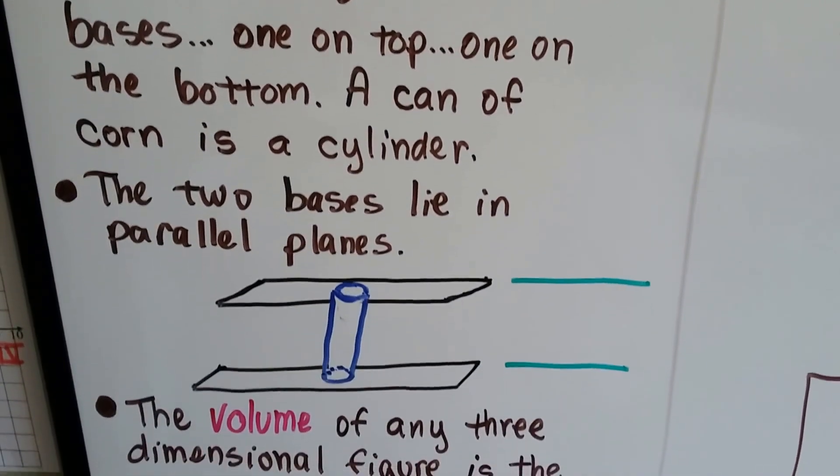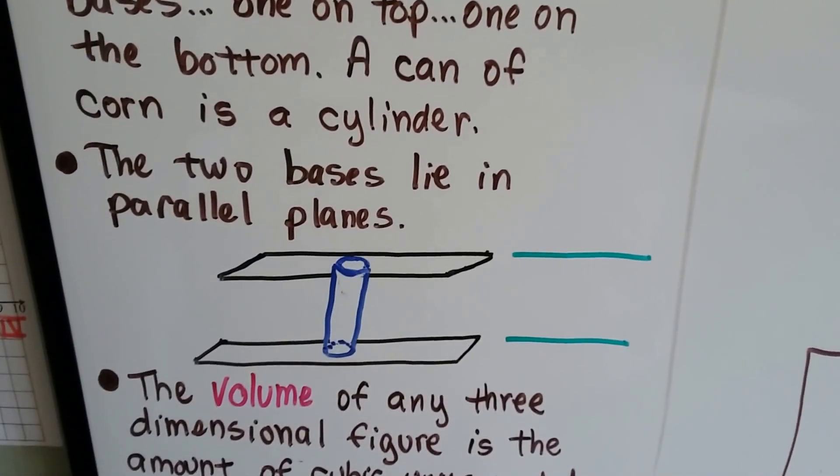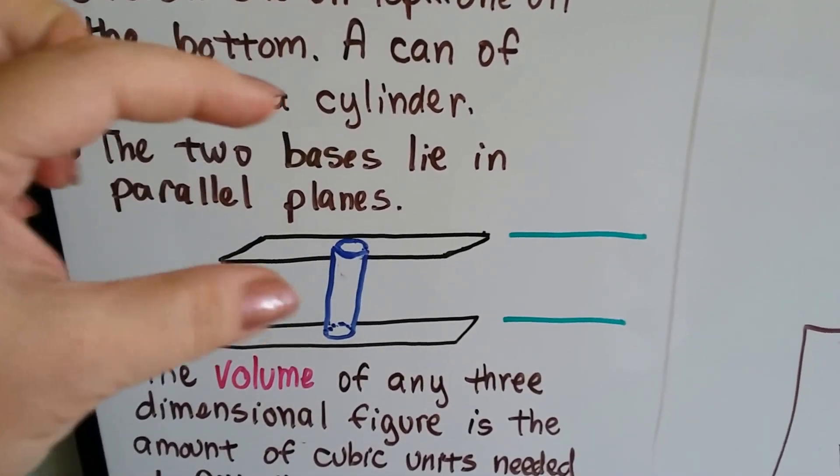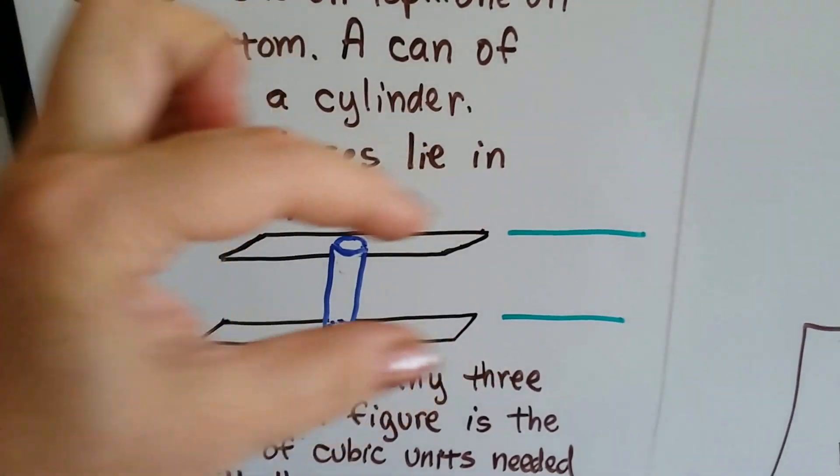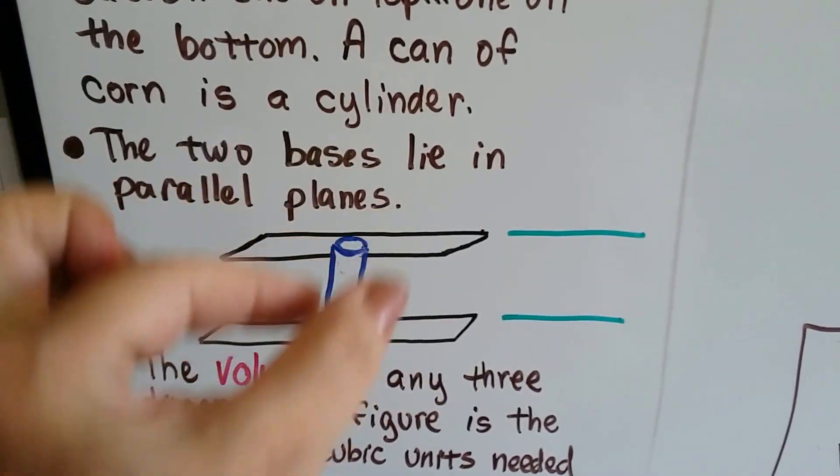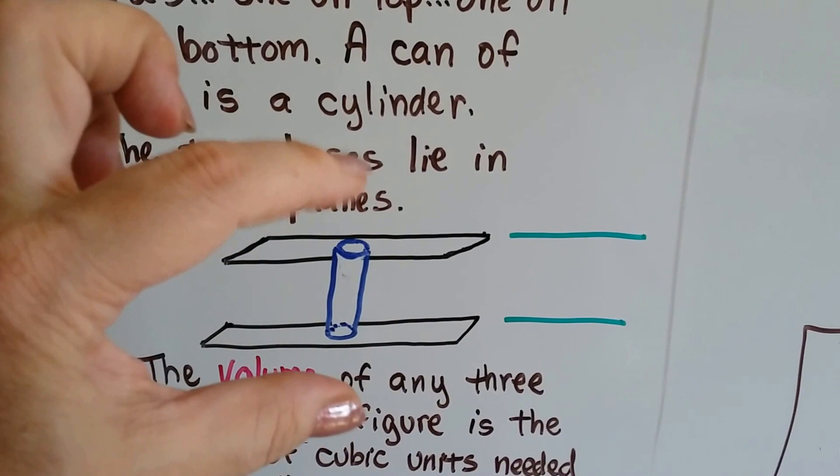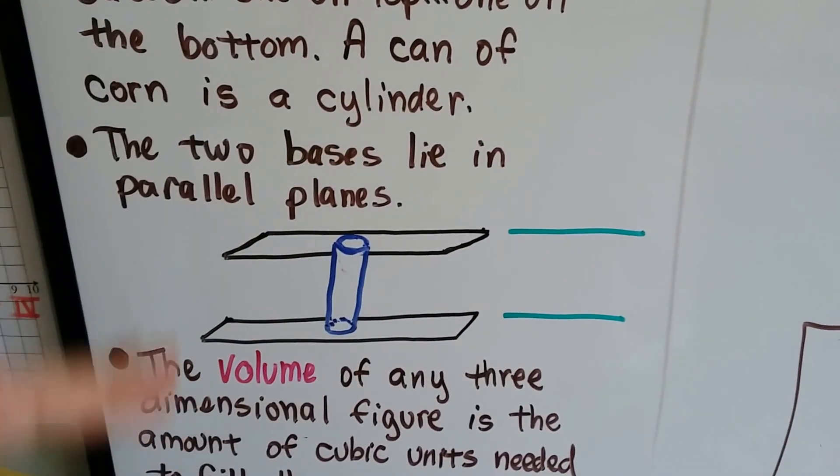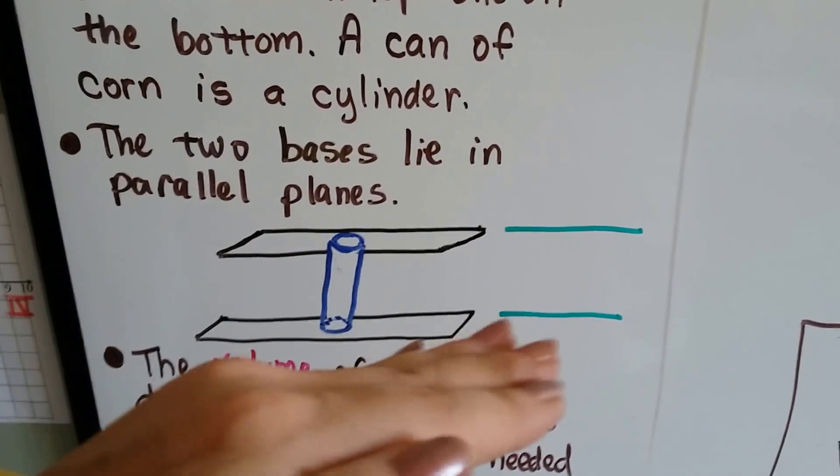One on the top, one on the bottom. A can of corn is a cylinder. And the two bases lie in parallel planes. And then the cylinder would be in between them. One would be on the top and one would be on the bottom. So imagine a piece of paper on the top and a piece of paper on the bottom.